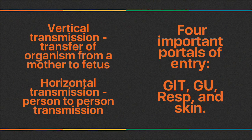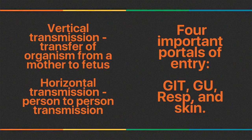There are two important types of transmission: vertical and horizontal. Vertical transmission means transfer of an organism from a mother to fetus, usually during pregnancy or through breastfeeding. Horizontal transmission includes person-to-person transmission, which is the usual case scenario.